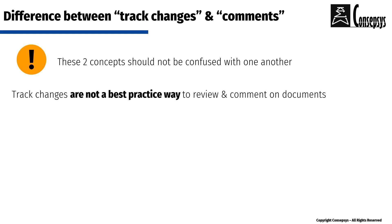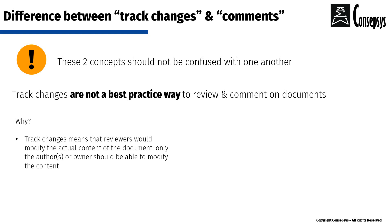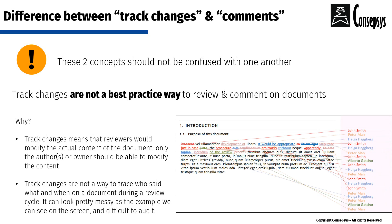These two concepts are both important and critical, but they should not be confused with one another. For example, it is not good practice to use track changes as a way to review and comment on documents, because track changes means you are modifying the actual content of the document — and only the author or owner of the document should be able to modify it, not reviewers. Track changes are also not a way to trace who said what and when during a review cycle. It can look very messy, as shown on screen, making it very difficult to audit.